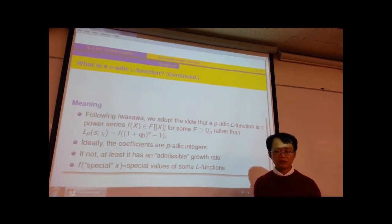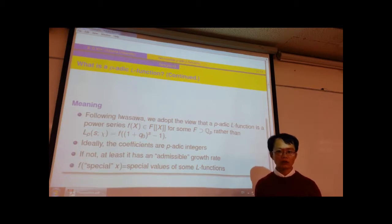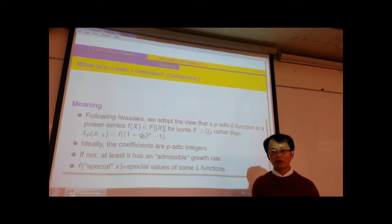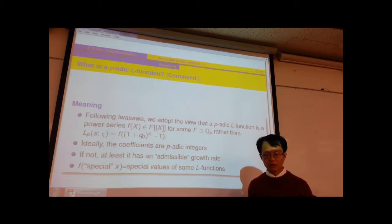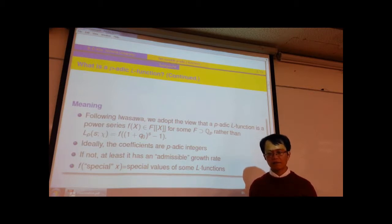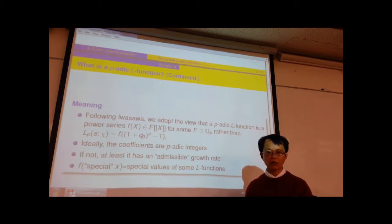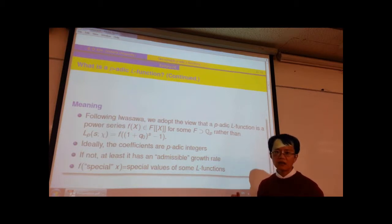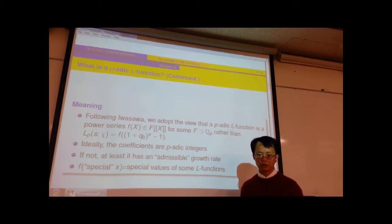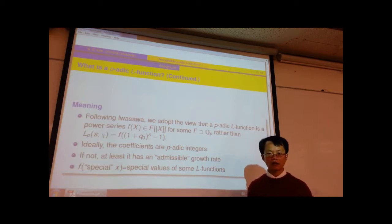Today, we will adopt the point of view of Iwasawa, which is more modern and more prevalent. That point of view is that a p-adic L-function is a p-adic power series which interpolates the special values of the L-functions. For example, for Iwasawa, the Kubota-Leopoldt L-function was in turn a transform of a special kind of p-adic power series with integral coefficients. Ideally, the coefficients of a p-adic L-function are integral, but normally they are not necessarily integral.